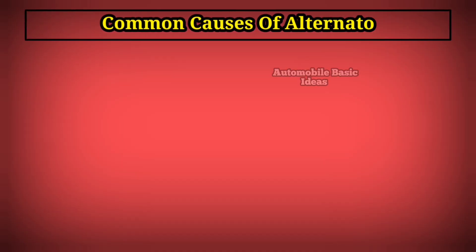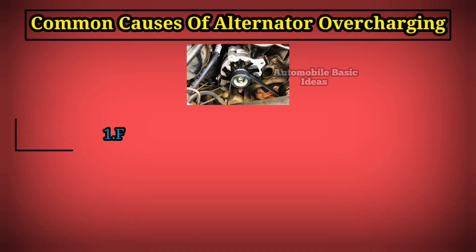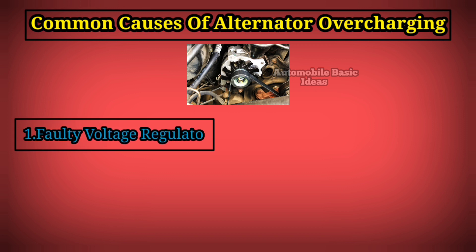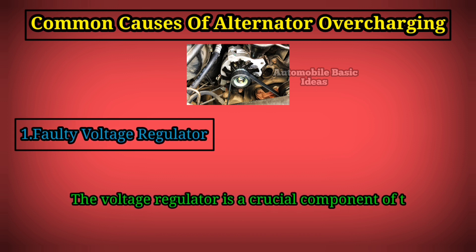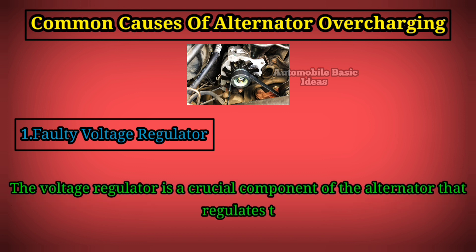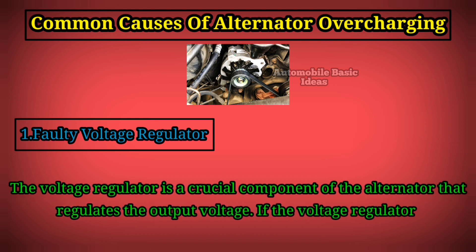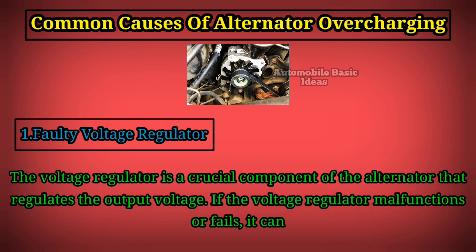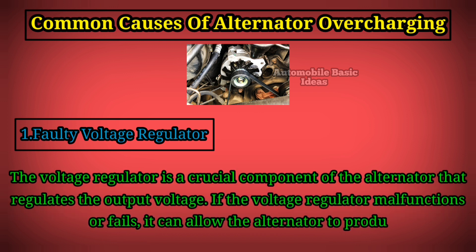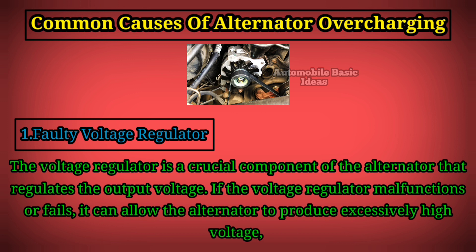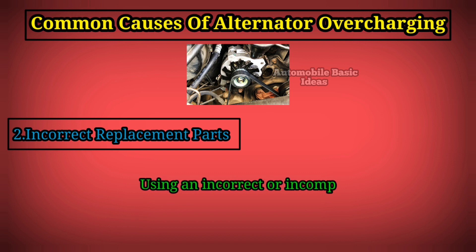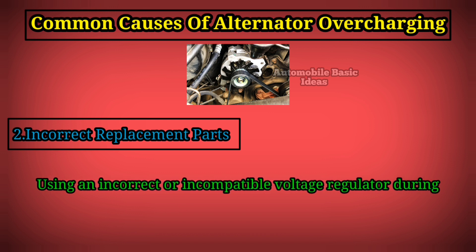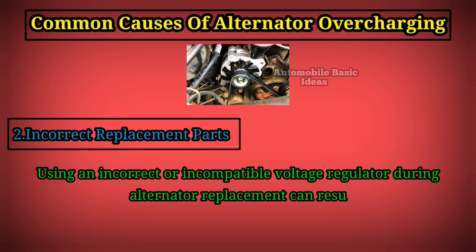Common causes of alternator overcharging. 1. Faulty voltage regulator: The voltage regulator is a crucial component of the alternator that regulates the output voltage. If the voltage regulator malfunctions or fails, it can allow the alternator to produce excessively high voltage, leading to overcharging. 2. Incorrect replacement parts: Using an incorrect or incompatible voltage regulator during alternator replacement can result in overcharging.